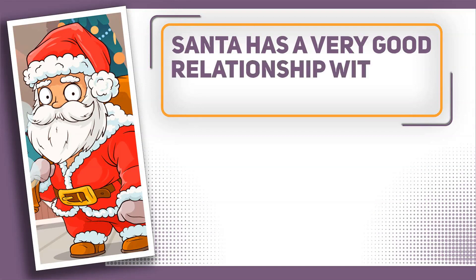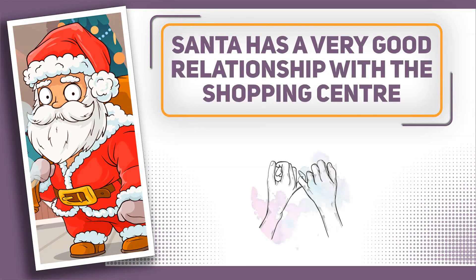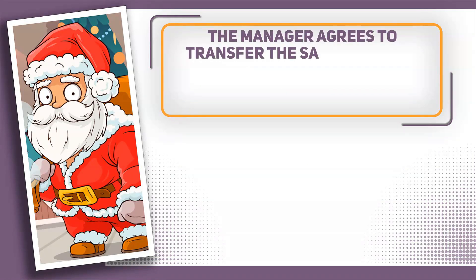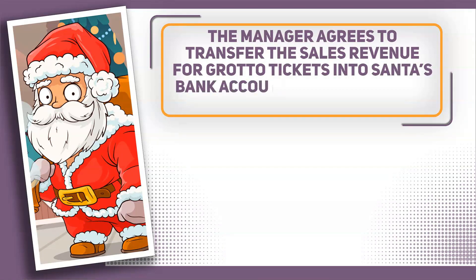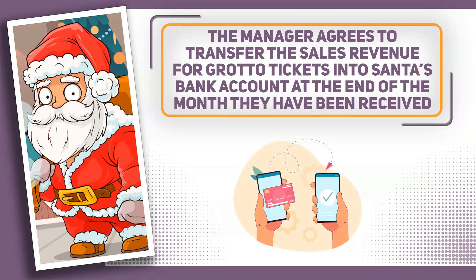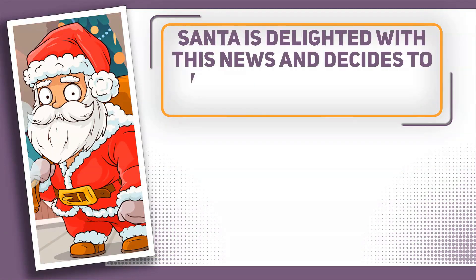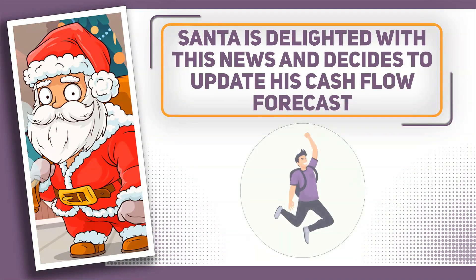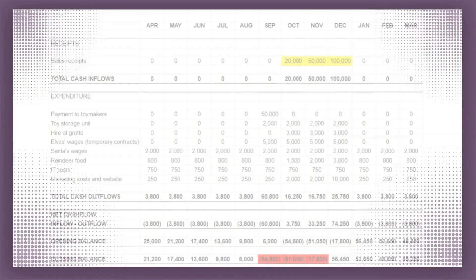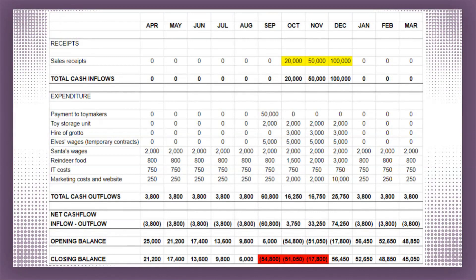Santa has a very good relationship with the shopping centre — he's had a grotto there every Christmas since it was built 50 years ago. He explains his cash flow problem to the manager, who is very understanding and agrees to transfer the sales revenue for grotto tickets into Santa's bank account as soon as they're received. Santa is delighted with this news and updates his cash flow forecast to reflect the fact that his sales receipts will now come in a month earlier. The updated forecast now shows that he's predicted to have a negative cash balance for only three months — from September through to November — with the worst month being September at minus £54,800, which is still rather a lot of money.